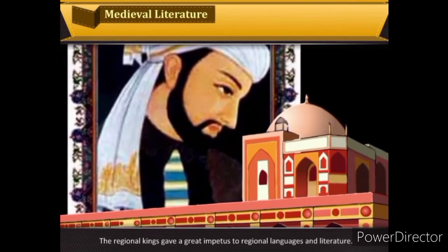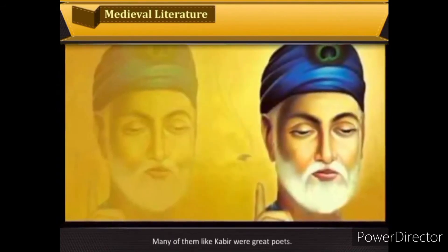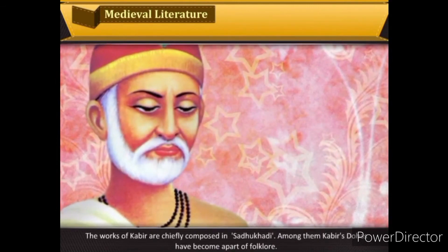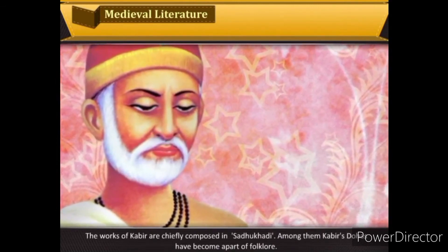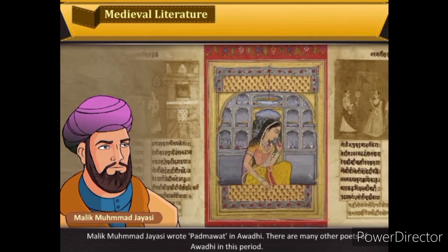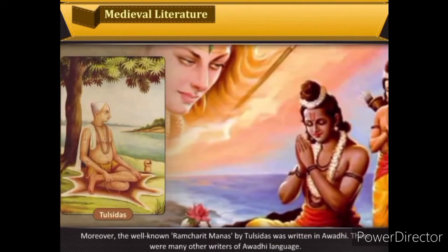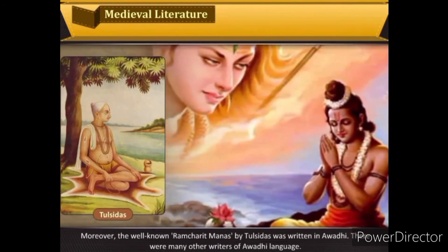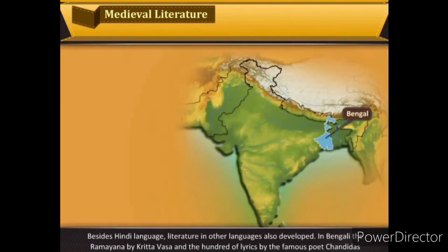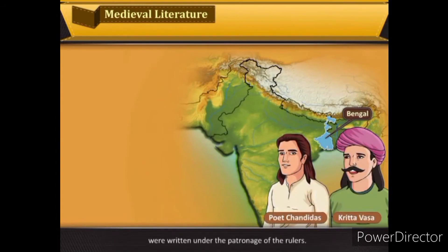Regional kings gave great impetus to regional languages and literature. Bhakti saints preached in the languages of the people — many of them, like Kabir, were great poets. Bhojpuri and Awadhi were the major dialects of those days. Kabir's works are chiefly composed in Sadhu Khadi, and his dohas have become part of folklore. Malik Muhammad Jayasi wrote Padmavat in Awadhi. The well-known Ramcharitmanas by Tulsidas was also written in Awadhi. In Bengali, the Ramayana by Krittivasa and the lyrics of Chandidas were written under the patronage of rulers.